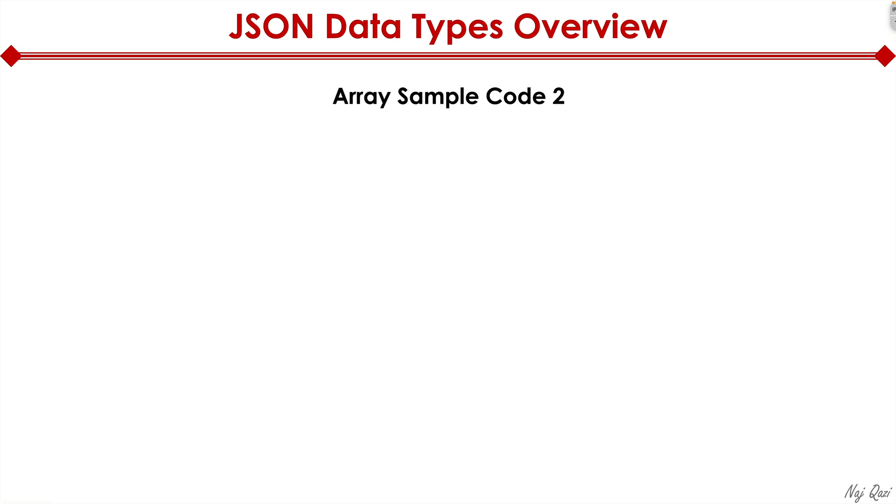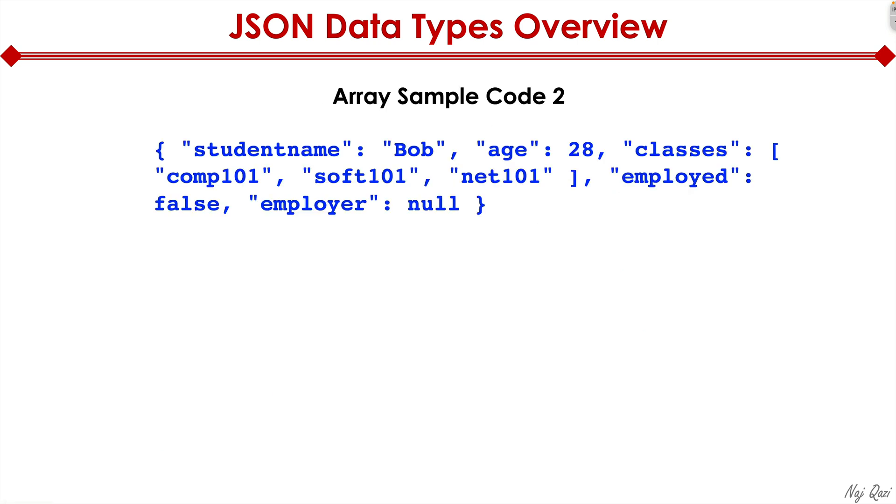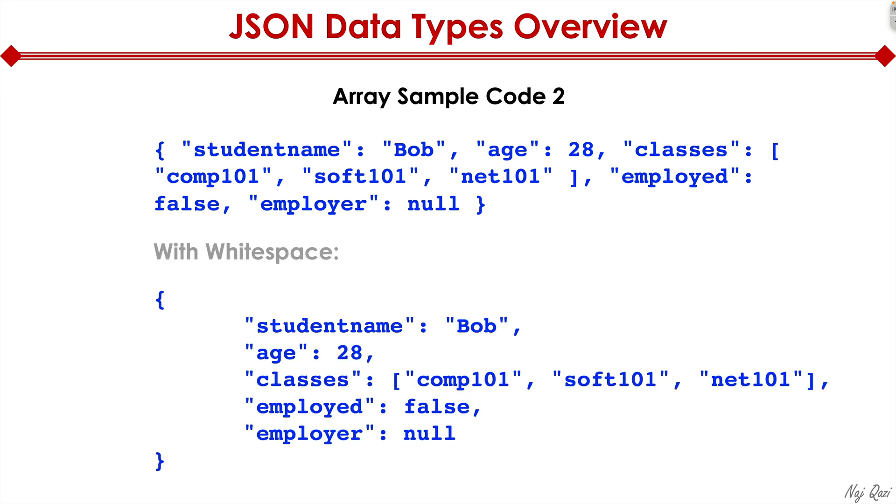Now let me show you another sample code. Here the student name is Bob, age 28, classes comp 101, soft 101, net 101, employed false, employer null. Let me add white space to it and give you a quick walkthrough of this code.